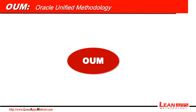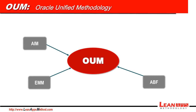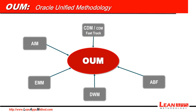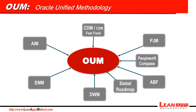Oracle Unified Methodology is nowadays the only method certified by Oracle to implement or upgrade their products. It embraces all the previous Oracle methods which are now retired, such as AIM and AIM for Business Flows or ABF, which were the two Oracle methods for application implementations. EMM, Easy Path Migration Methodology, Data Warehouse Methodology, CDM and CDM Fast Track, as well as Project Management Methodology. It also includes methods which came from PeopleSoft and Sybil to implement their products.